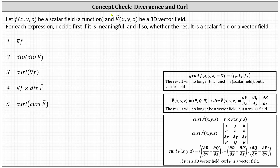For a quick review: we find the gradient of a function, and the result is no longer a scalar field but a vector field. We determine the divergence of a vector field, and the result is no longer a vector field but a scalar field or function. And we determine the curl of a vector field — if the vector field is three-dimensional, then the curl is another vector field.